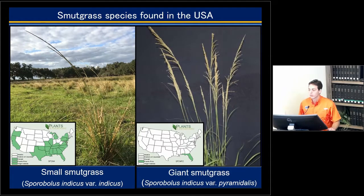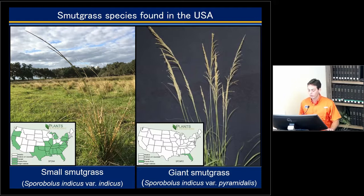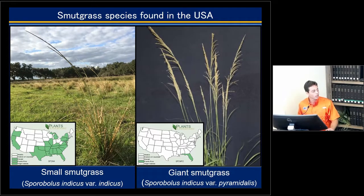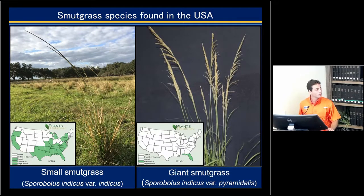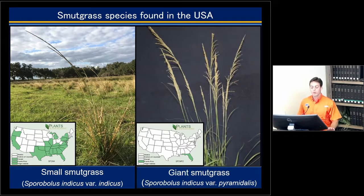The small smudge grass is the one more spread throughout the entire country — it can be found in 23 different states — whereas giant smudge grass is more of a problem for Florida, especially in south and central Florida, but is working its way north and has been observed in Georgia, Louisiana, and Mississippi. The main difference between the two is size: small smudge grass usually reaches two to three feet in height, while the giant can reach three to four feet. The easiest way to tell them apart is by the seed head — the small one typically has a black color in the seed head due to the presence of a fungus.